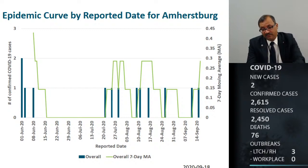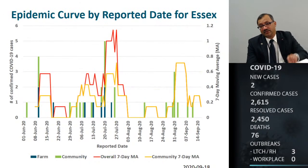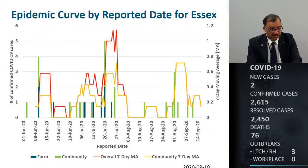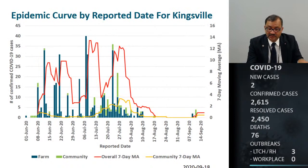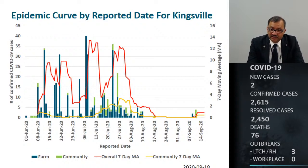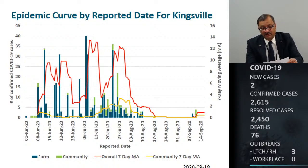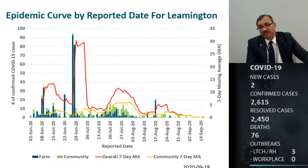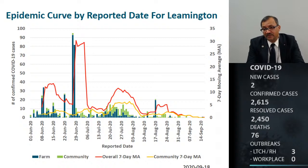Looking at Amherstburg, there are very few cases. Essex has seen slightly more cases compared to Amherstburg. For Kingsville, we saw a large number of cases, especially in June, July, and early August, but since then cases have gone down drastically with very few cases as of the last couple of days. Looking at Leamington, there was significant activity in June, early to mid-July, and then cases are relatively stable, trending downward in the more recent days.